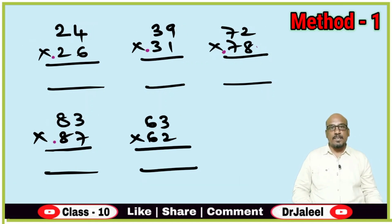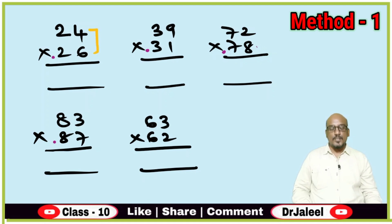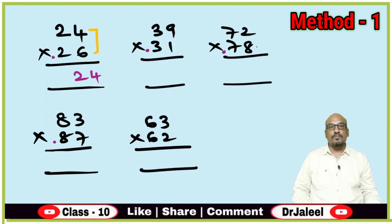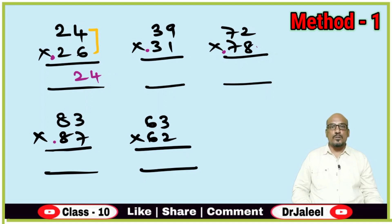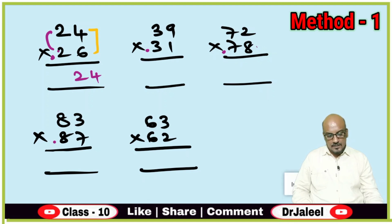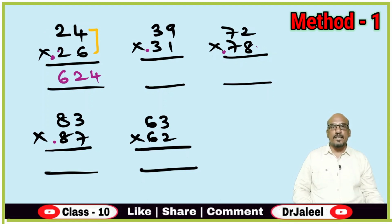Let us multiply these. First, 6 × 4 is 24. Write it directly. Then on the left side, 2 is there. You increase 1: 2 plus 1 is 3. Then 3 × 2 is 6. So the answer is 624.